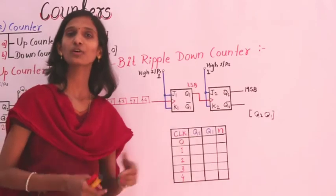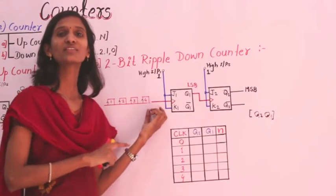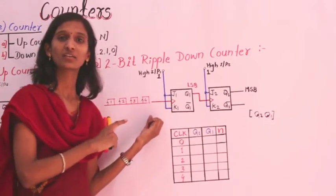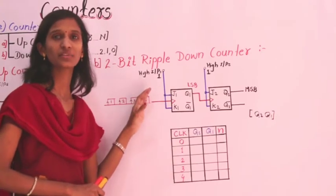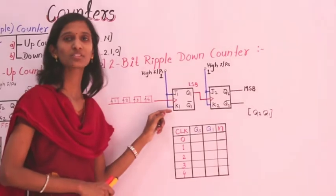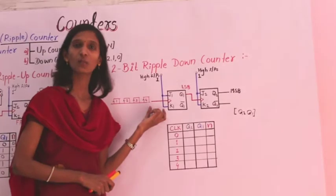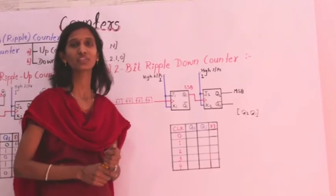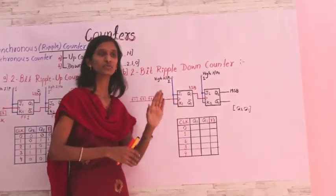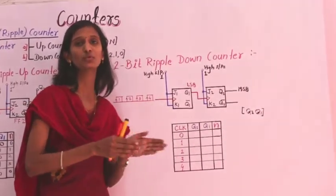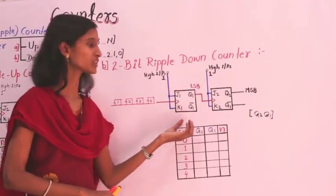For this counter operation, we are not concerned with the J and K inputs. We only consider the number of clock cycles, because the counter counts only the number of clock pulses applied to the system. The operation depends on the toggling mode of the flip-flops — toggling means changing state from 0 to 1 and 1 to 0 — with the two flip-flops triggering alternately.